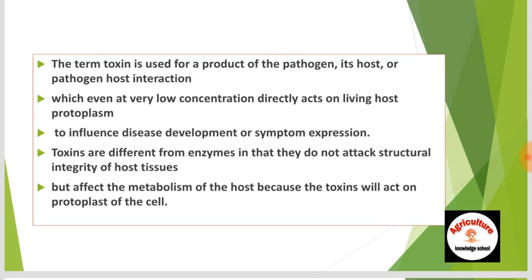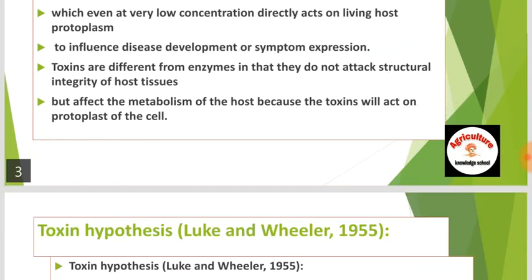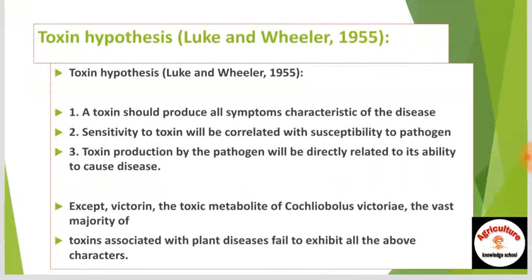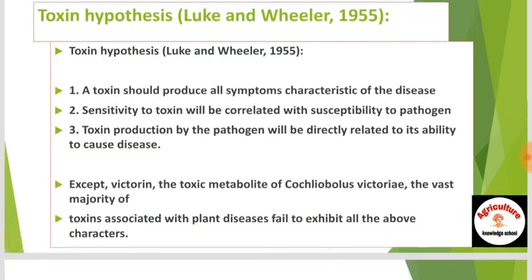The toxin hypothesis was given by Lock and Willer in 1955. There are three hypotheses: first, a toxin should produce all symptoms characteristic of the disease; second, sensitivity to the toxin will be correlated with susceptibility to the pathogen; third, toxin production by the pathogen will be directly related to its ability to cause disease.